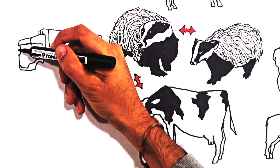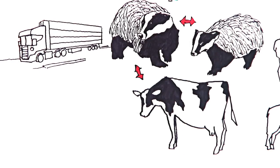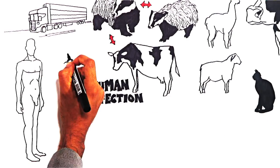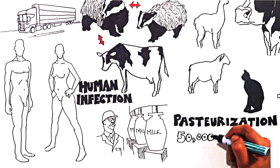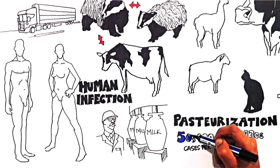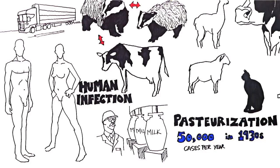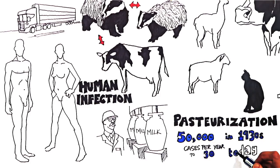Animal transport can also spread the bacteria over long distances. Human infection is possible, but since routine milk pasteurisation, the number of human cases has dropped from 50,000 per year in the 1930s to around 30 cases per year today.